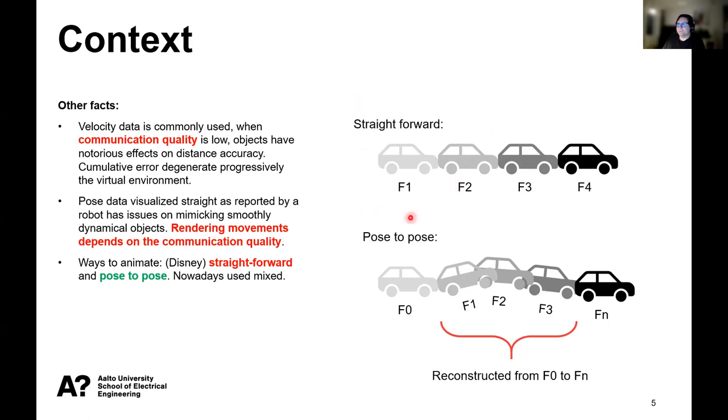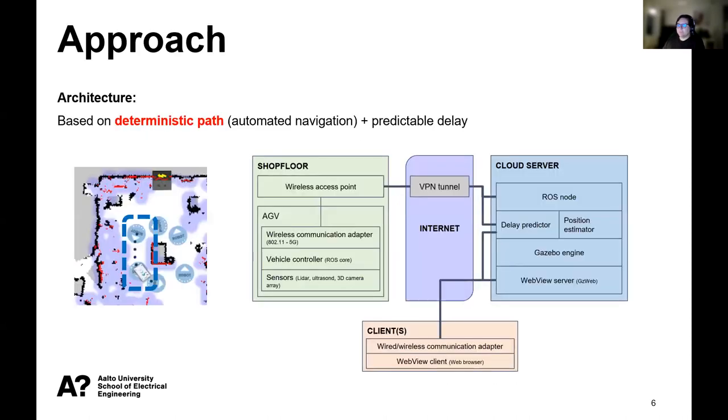Straightforward, which is update by update or post-to-post, which is an initial update telling you the initial status of the robot and second update telling you the final position, and then you reconstruct the displacement in between, so you fill the gap however you like. In our case, we are trying to make the post-to-post, but we are trying to overcome the delays produced by the communication.